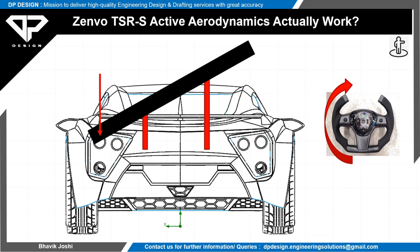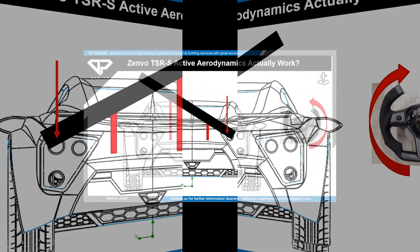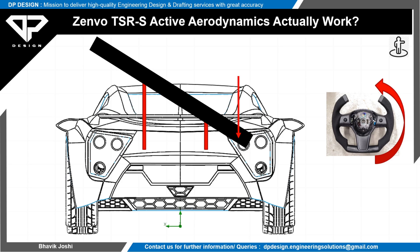The wing is activated when it detects 0.5 g of lateral loading, then pulled briskly over by the hydraulic rams. Developed in conjunction with Arrowtech, a Danish company that also did the aero work on the Koenigsegg One:1, Zenvo limits the downforce to a maximum of 270 kg by varying the wing's angle of attack.